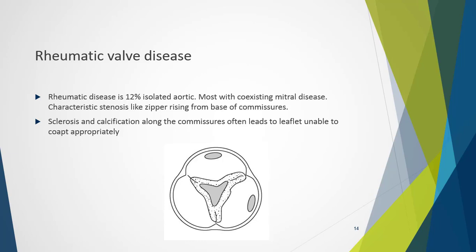The points of coaptation are points of irritation that aggravate the inflammatory process associated with rheumatic disease. As the bases of the commissures move the least, these fuse first, slowly working towards the centre of the valve. Sclerosis and calcification along the commissures create stenosis but also lead to the leaflets being unable to co-apt appropriately, resulting in aortic regurgitation. We can see the small orifice area and thickened, calcified, roughened commissure on the valve.